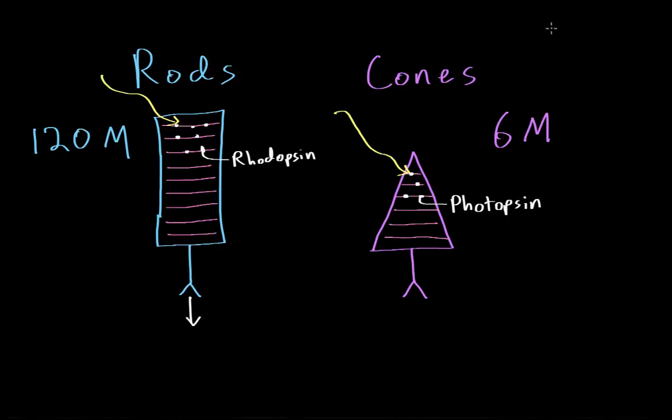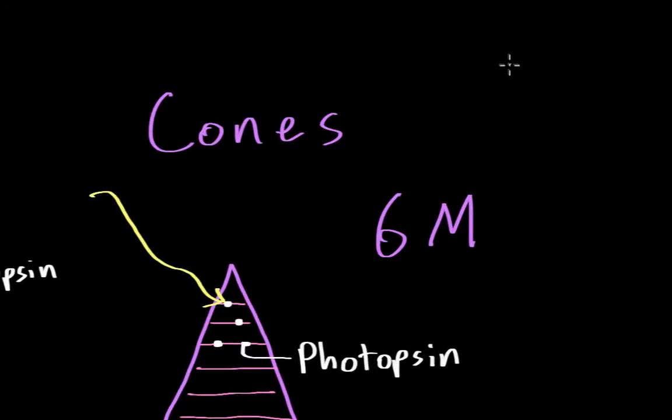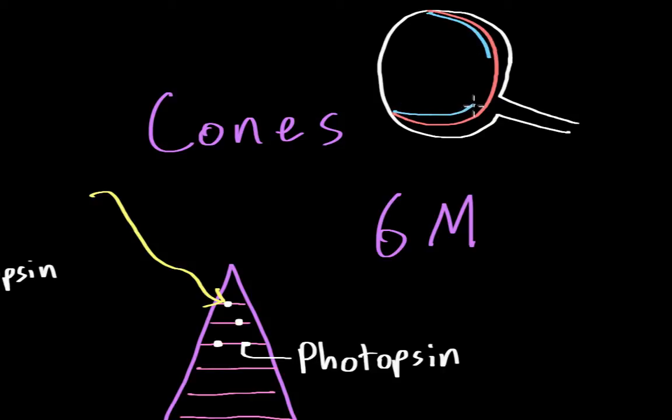Another big difference between rods and cones is where they are located in the eyeball. So if I draw a very simplified diagram of an eyeball, and this is the optic nerve exiting the back of the eye, so this would be the front of the eyeball, this is the back of the eyeball, and as I mentioned in a previous video, the back of the eyeball is coated by a membrane known as the retina. So rods are actually found in the periphery of the eyeball, so they're found in this area over here and in this area over here.